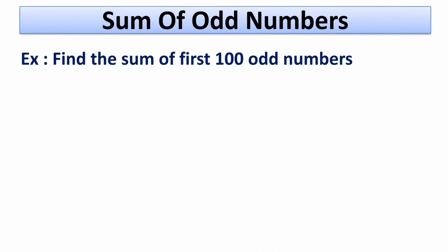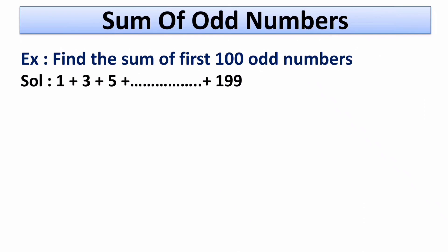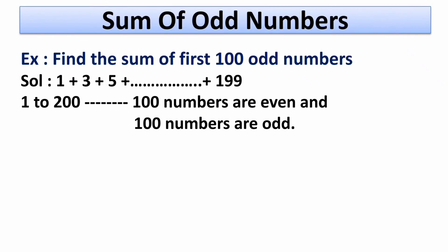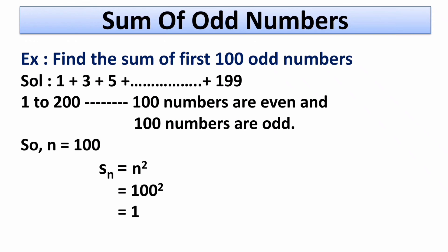The next problem is to find the sum of first 100 odd numbers. Just as with even numbers, we consider numbers from 1 to 200 to get the first 100 odd numbers. From 1 to 200 the last odd number is 199, so we have 1 plus 3 plus 5 up to 199. By considering 1 to 200 we get 100 odd numbers, so the value of n is 100. Putting this in the formula Sn equals n squared, we get 100 squared equals 10,000. Thus the sum of first 100 odd numbers is 10,000.